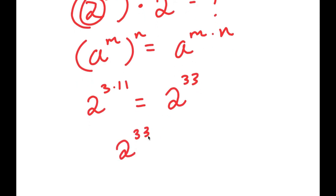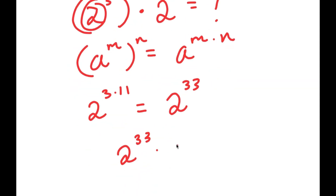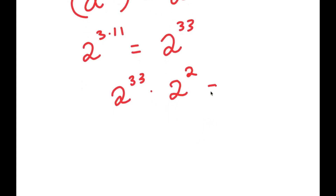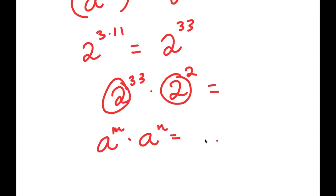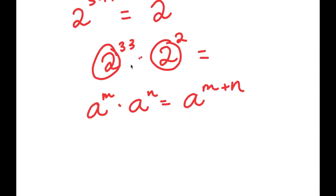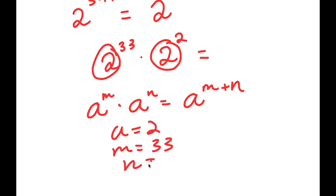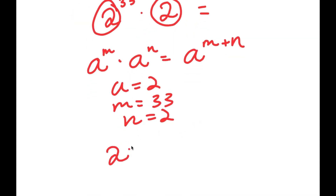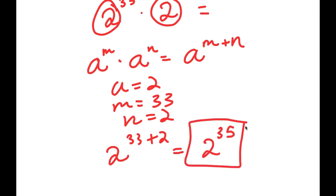So now I have 2^33 times 2². Because both bases are the same, if I have a^m times a^n, this equals a^(m + n). So I can rewrite this as 2^(33 + 2), which equals 2^35. This is my final answer — I can't simplify this any further because 2^35 is an extremely large number.